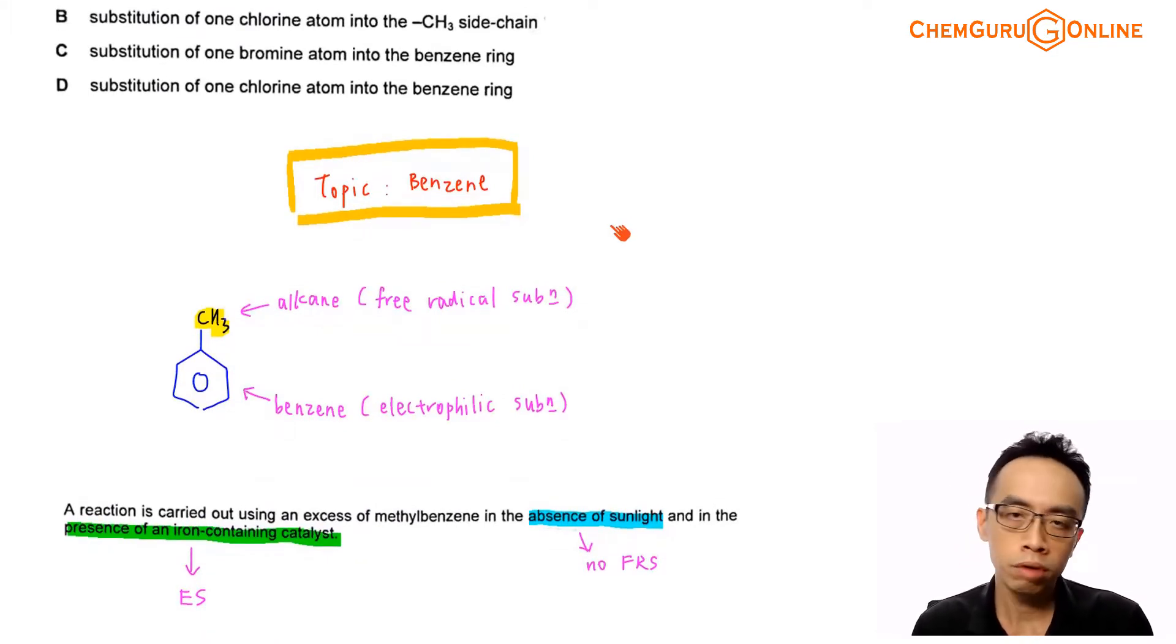Now for methylbenzene, of course we have two functional groups present. We have the methyl group, which is alkane functional group, and we have benzene. And if I consider the mechanism, each of these functional groups will take part in. Alkane should undergo free radical substitution. Benzene will undergo electrophilic substitution reaction.